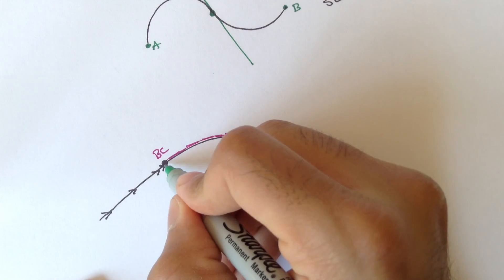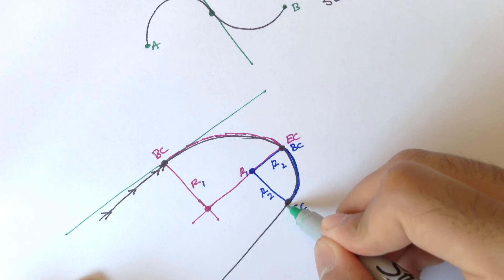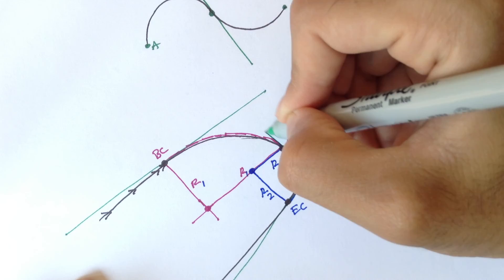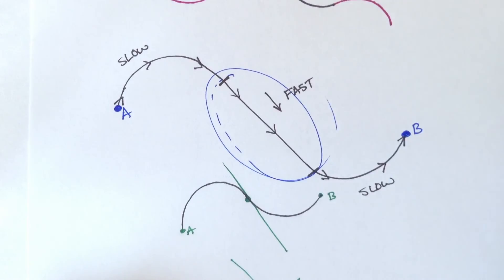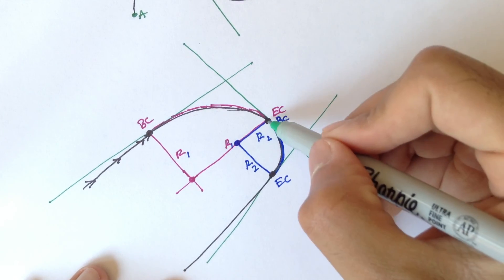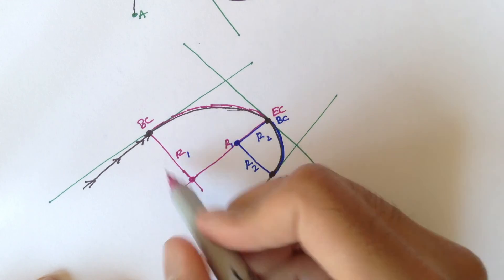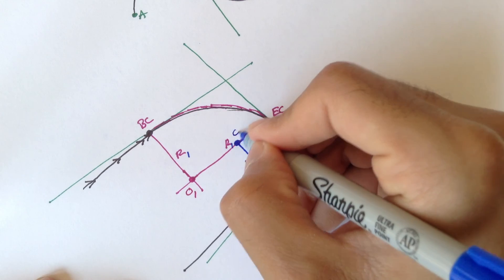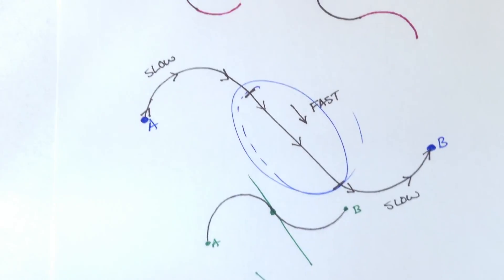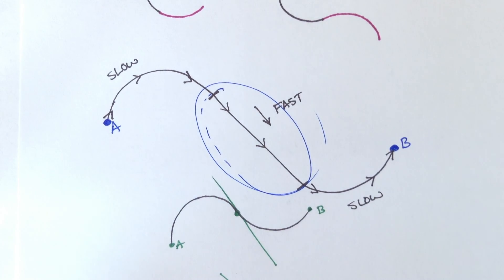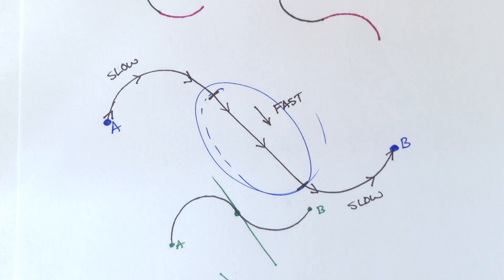We can draw a tangent here and a tangent here. So instead of having a straight line between two curves, we combine those two curves together, draw this tangent line, and create a much more efficient, smooth-flowing curve for traffic. Each of these curves has its own origin — this red curve has origin 1, and this blue curve has origin 2. So this is a quick introduction to compound curves. They're just two horizontal curves put together, and when you're doing problems for these types of curves, you can really split them up into separate horizontal curves. In the following video, we're going to draw a more in-depth diagram for these compound curves.